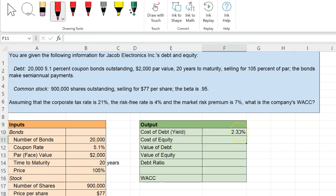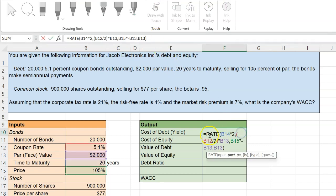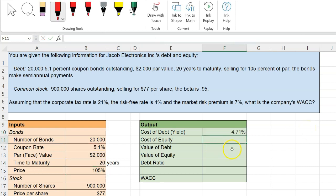However, be careful, this is the semi-annual yield because you've calculated it using semi-annual numbers. So one last thing that you need to do is double-click here and put all of this in parentheses and multiply it by two, because that is going to give you your annualized yield, which is 4.71%. Notice that this number is indeed less than 5.1%. And that is not a coincidence. That is because your bonds are selling at 105% of par.